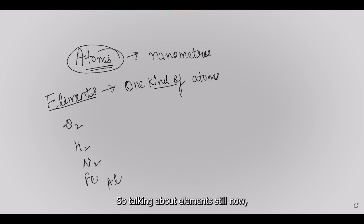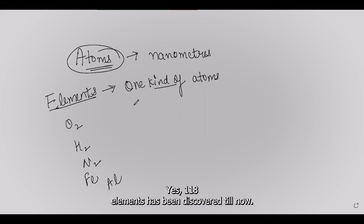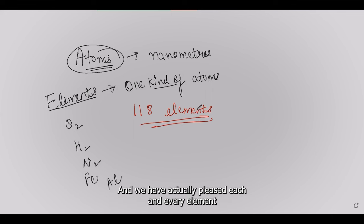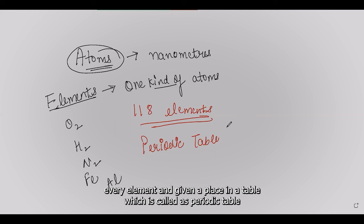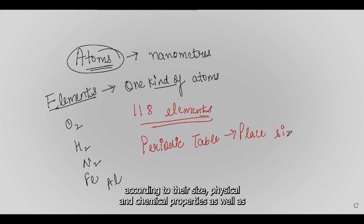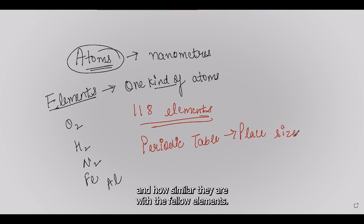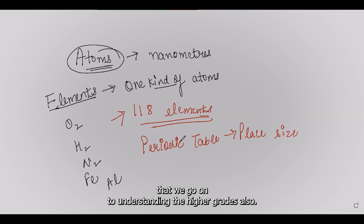Till now, 118 elements have been discovered. Each element has been named and placed in a proper table called the periodic table, organized according to size, physical and chemical properties, and similarity with other elements. We will understand the periodic table in higher grades.